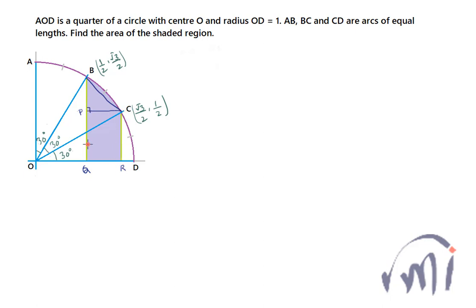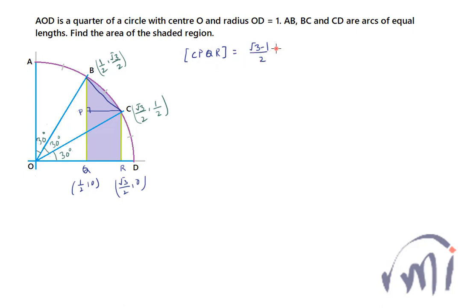Rectangle CPQR has point R at (√3/2, 0) and point Q at (1/2, 0). Its area equals base times height, where the base is √3/2 − 1/2 = (√3 − 1)/2 and the height is 1/2, the y-coordinate of point C. So the area of rectangle CPQR equals (√3 − 1)/4.